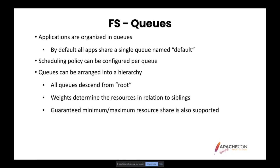FAIR Scheduler organizes apps into queues and shares resources fairly between these queues. By default, all apps share a single queue called 'default.' Within each queue, a scheduling policy is used to share resources between running apps. The default is memory-based fair sharing, but other options can also be used.